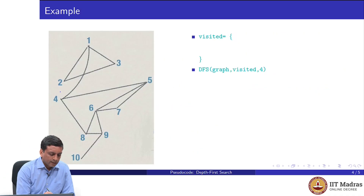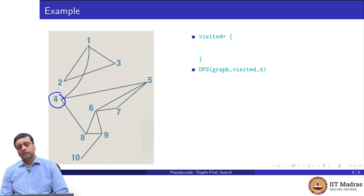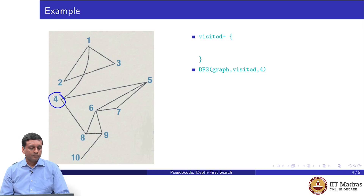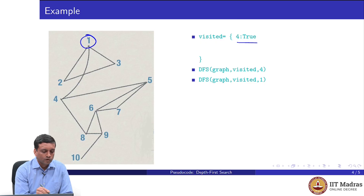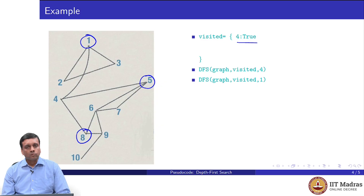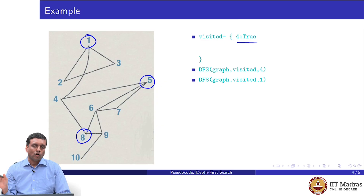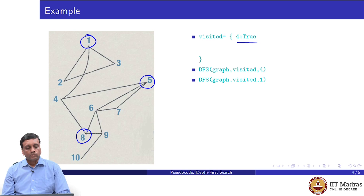I want to start DFS and find out what I can reach from vertex 4. I start with an empty dictionary visited — nothing has been visited so far — and I call DFS with this vertex. The first thing that happens is visited of 4 gets set to true. Then I have to look at the neighbours of 4, which are 1, 5, and 8. Assuming we always explore neighbours in increasing order, going through columns from smallest to largest, I will choose to visit 1 first. I set visited of 4 to be true and go into a recursive call for 1, suspending the call for 4.